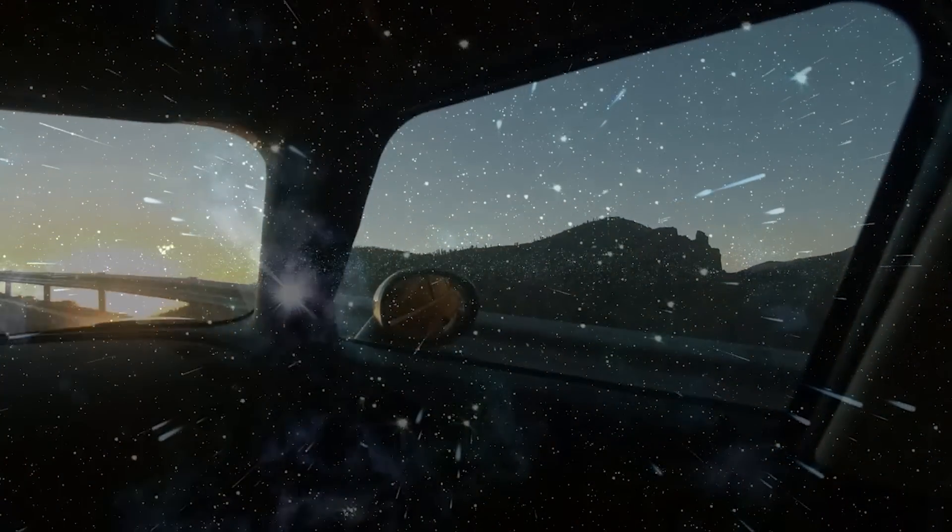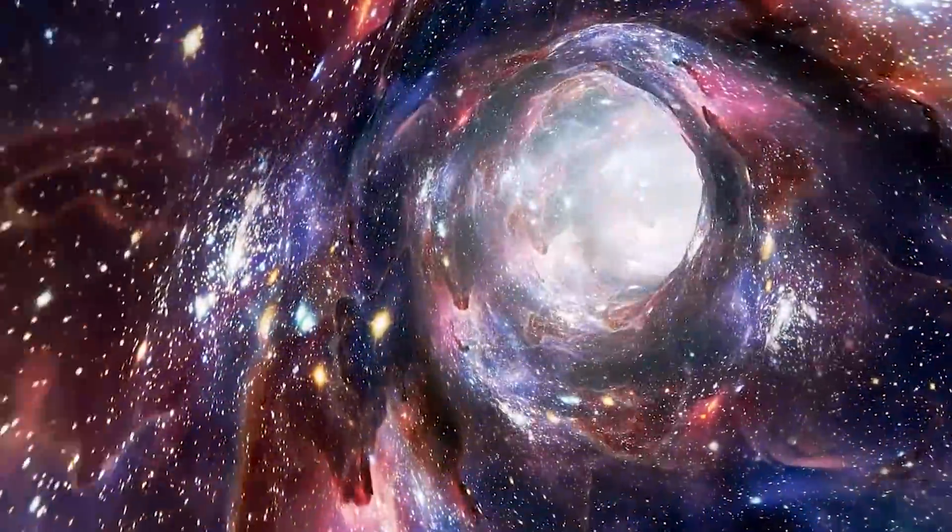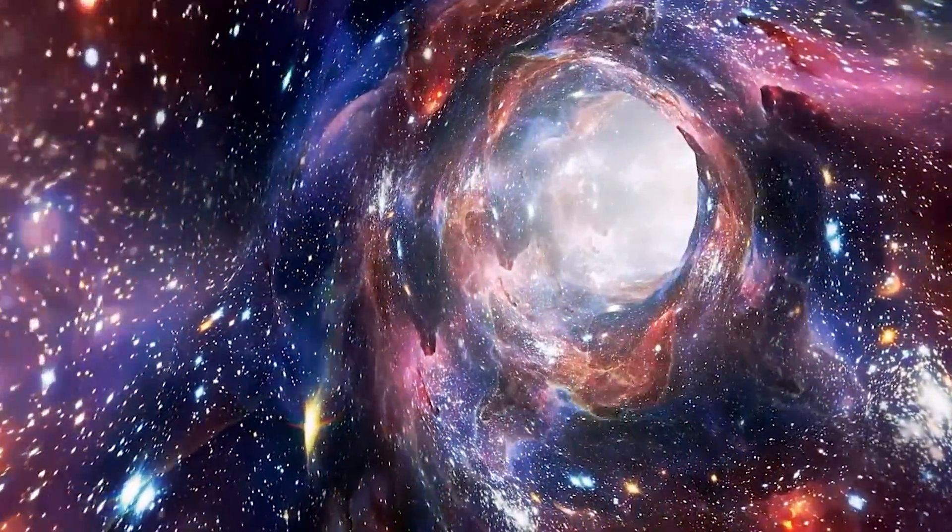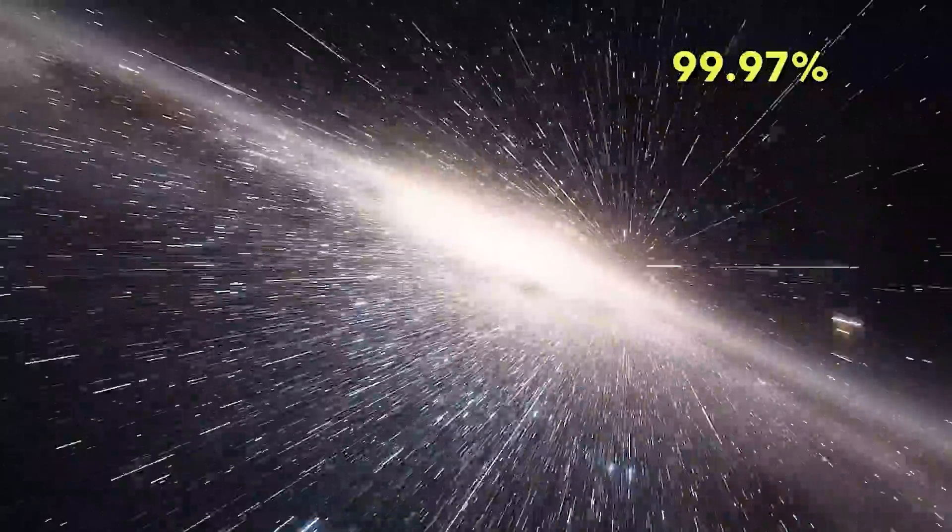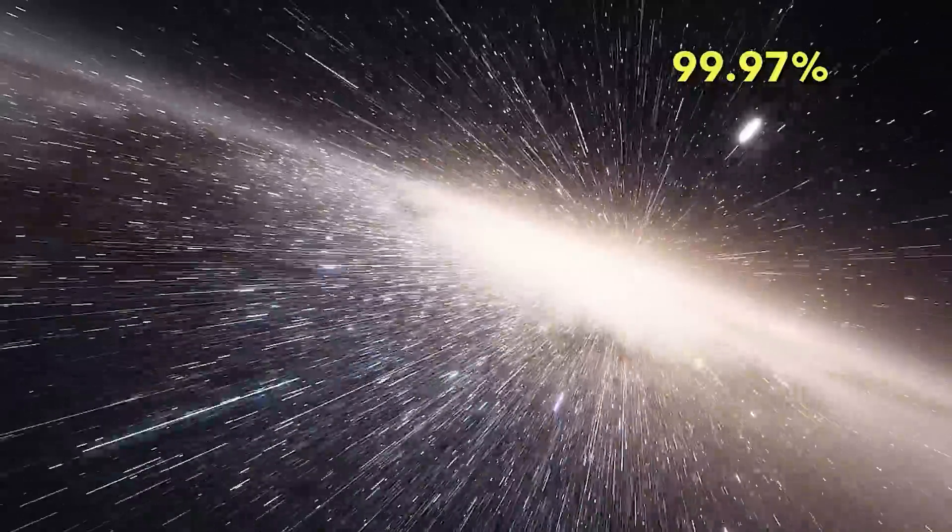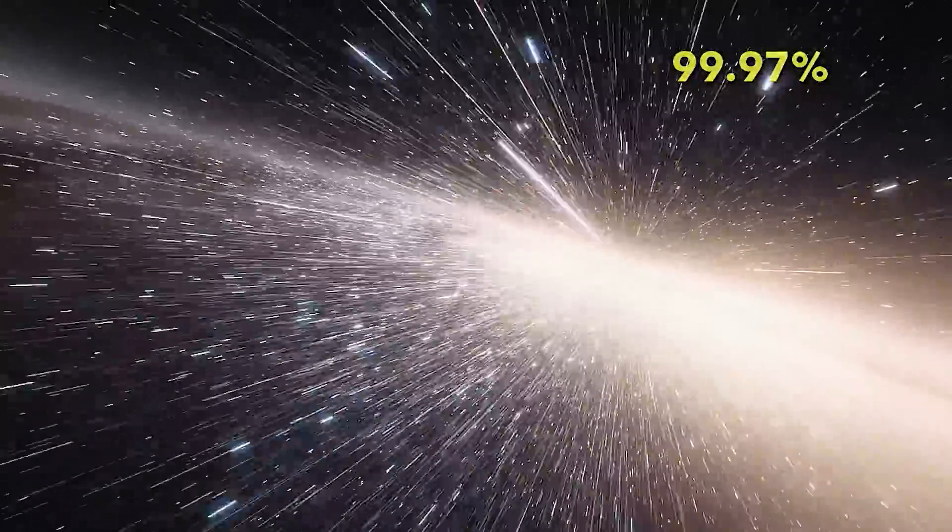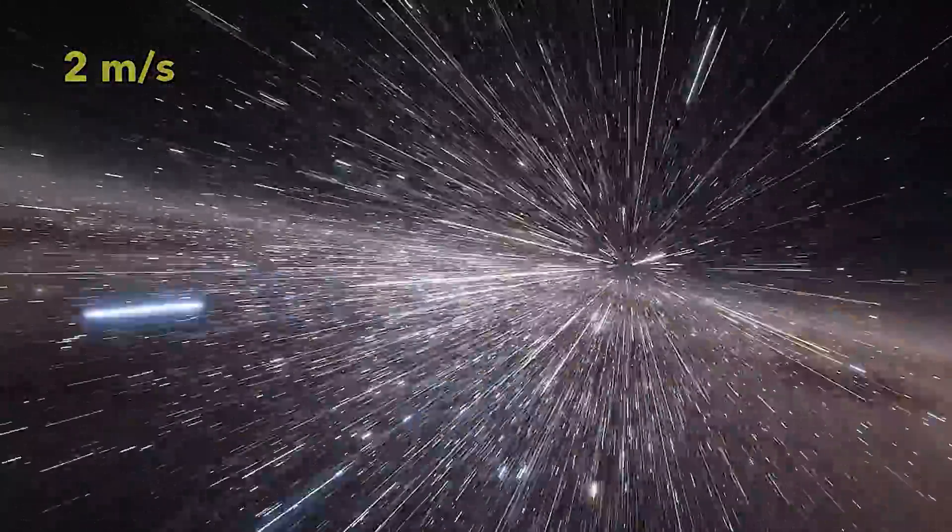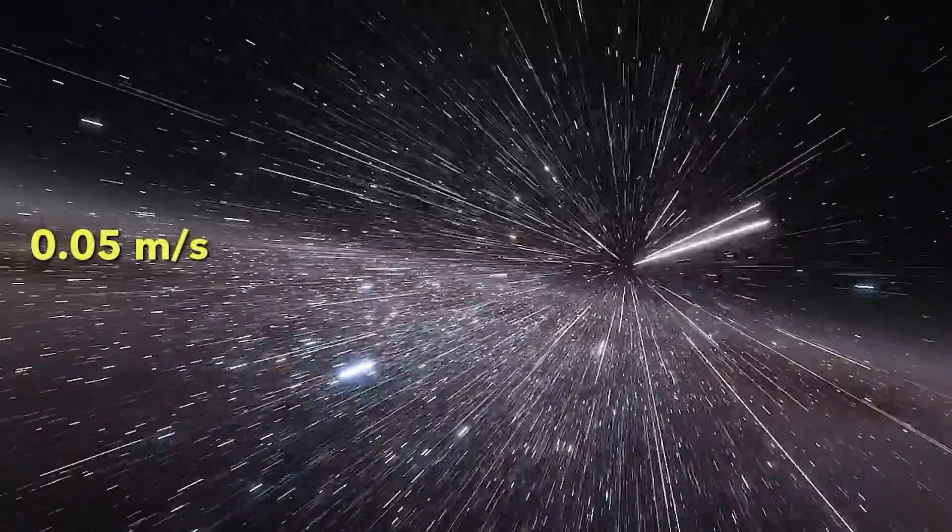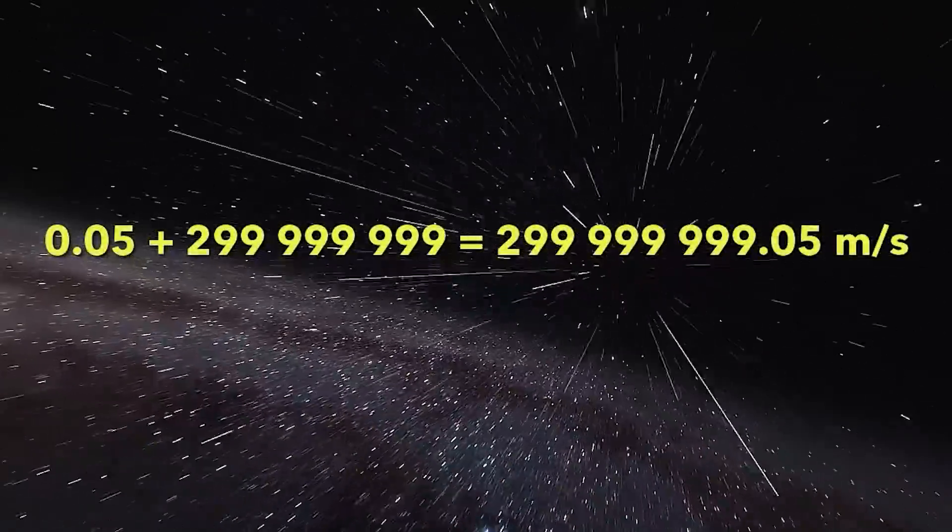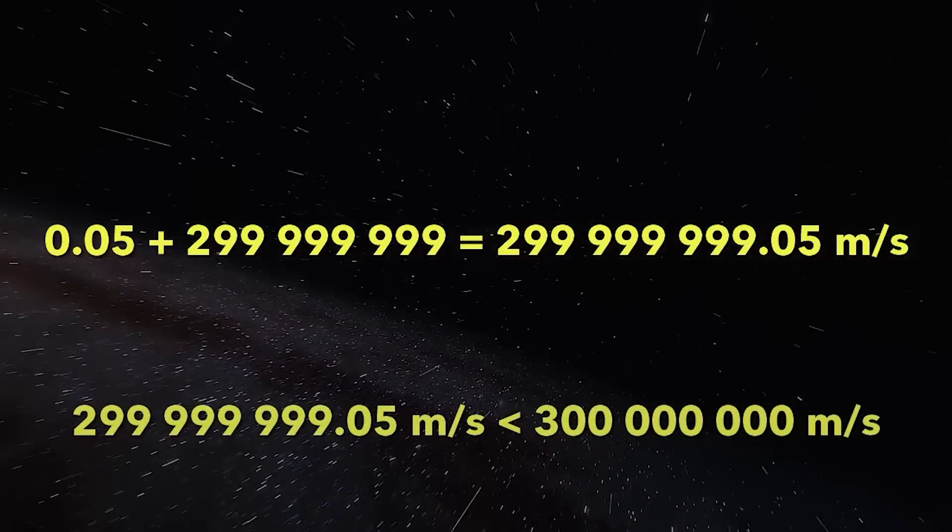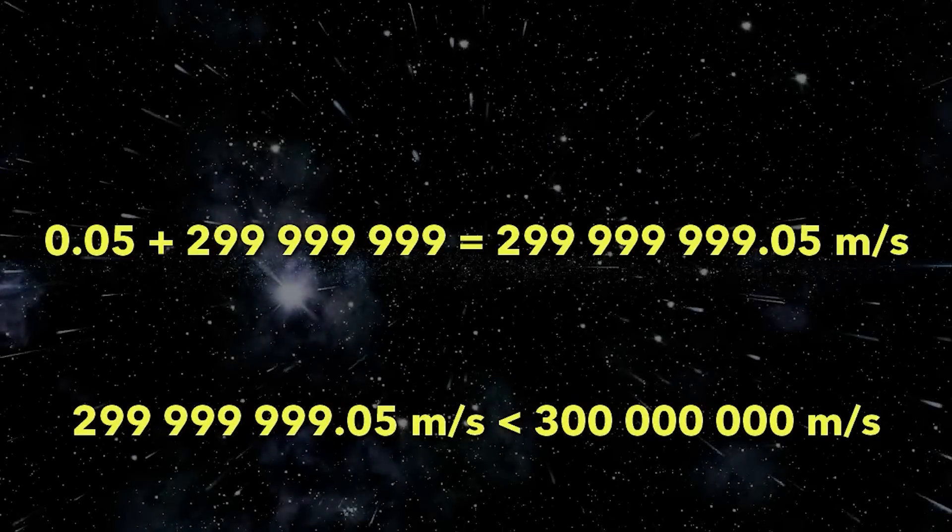This phenomenon discovered by Albert Einstein is known as time dilation. If you were traveling at 99.97% of the speed of light, calculations show that the ball speed of two meters per second would be reduced to 0.05 meters per second. Adding the reduced speed of the ball to the speed of the car gives you a value that is less than the speed of light.